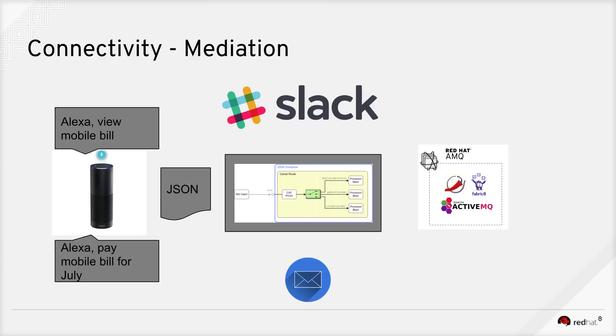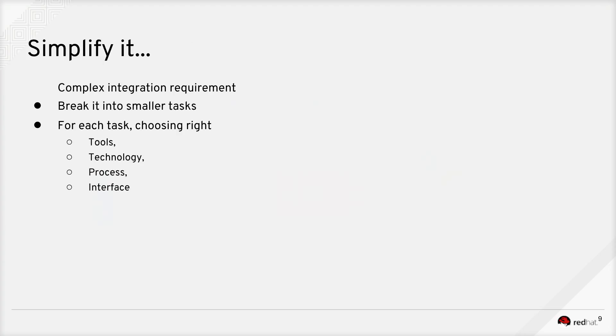So let's try to understand from a developer point of view — what does this mean for them? This centralized integration piece, which magically sits in there, achieves integration or interfacing with these very heterogeneous interfaces. But under the hood, what does it do? To understand that, we need to see from a developer point of view. Their approach is simplified: first there's a complex integration requirement, the developer understands it, and then the first task is to break it into smaller tasks. For each task, you need to choose the right tools, technology, process, and interface.